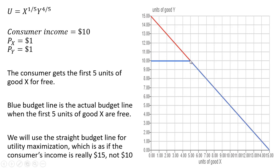On the other hand, with the first five units of good X free, if the consumer spent all his or her income on good X, the consumer would be able to buy 10 units of good X. Income is $10 and the price of good X is $1, so you could buy 10 units of good X and get five free. That would be a point at this extreme: because you're getting the first five units free, you would be able to get 15 units of good X.